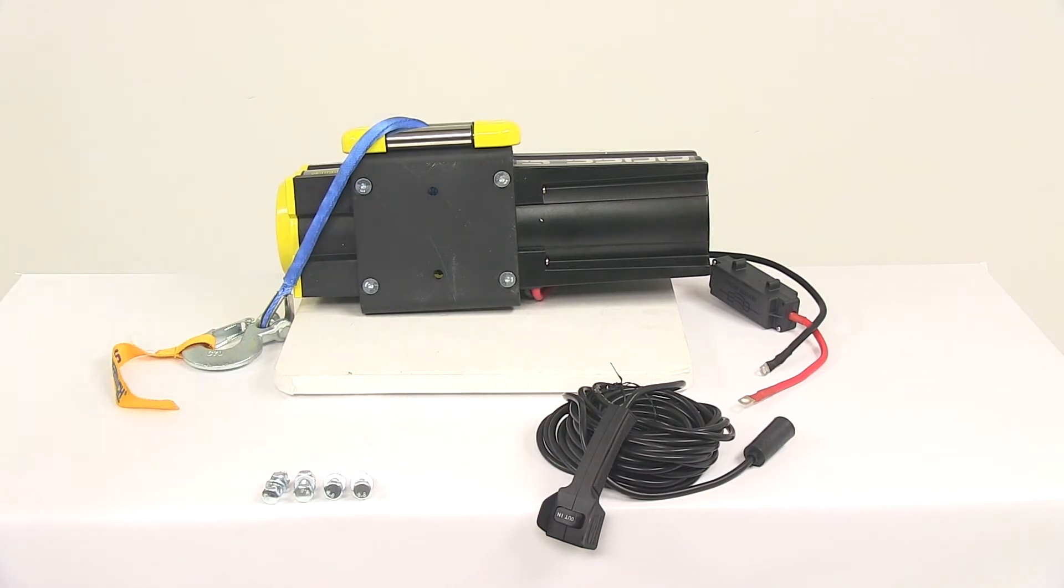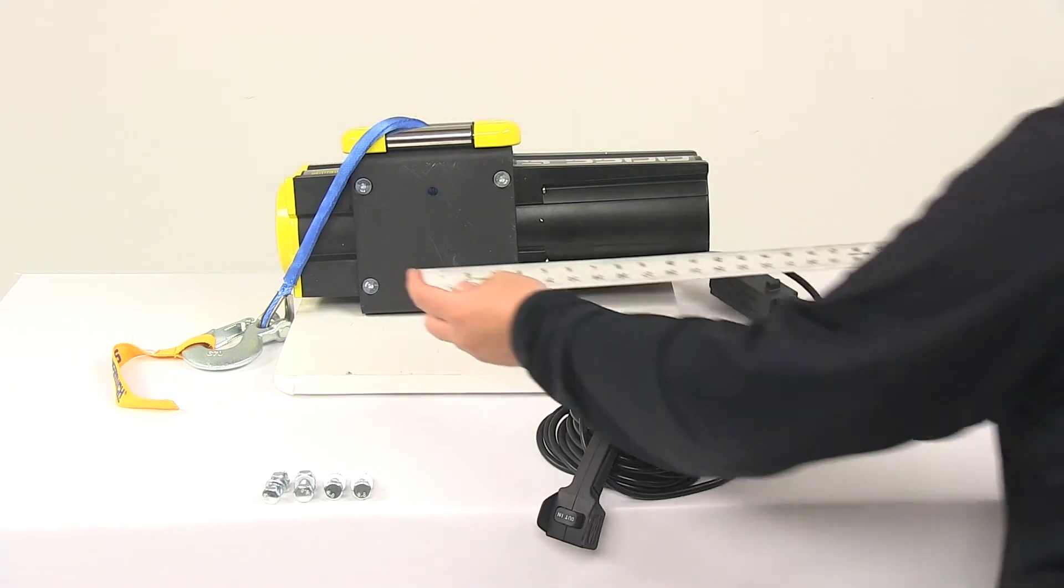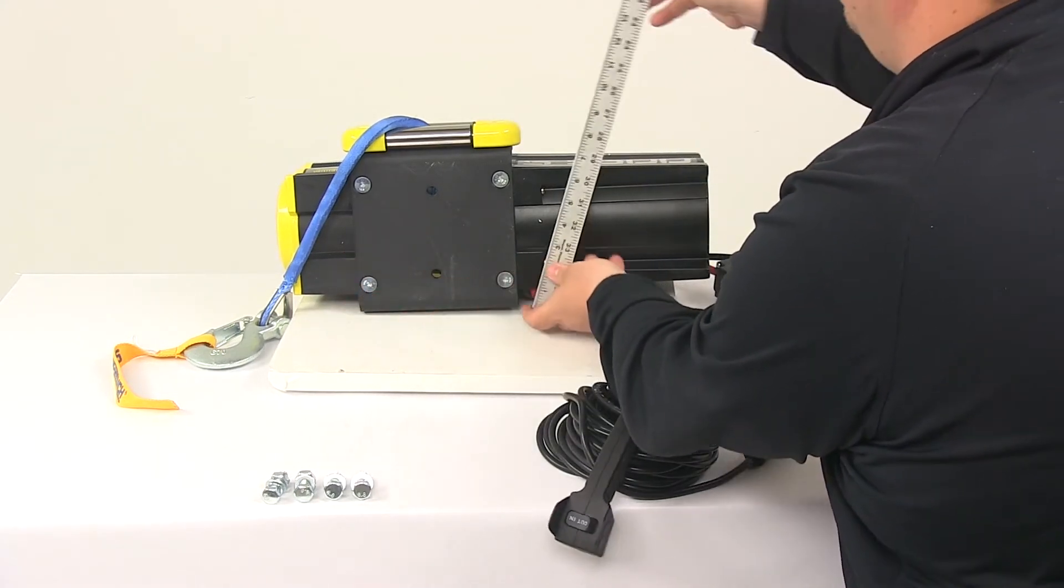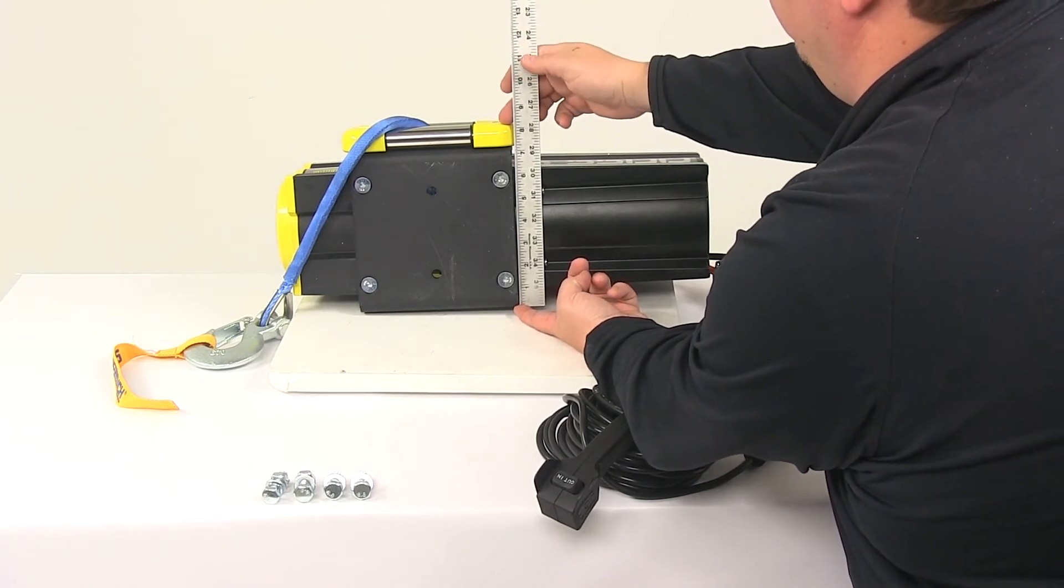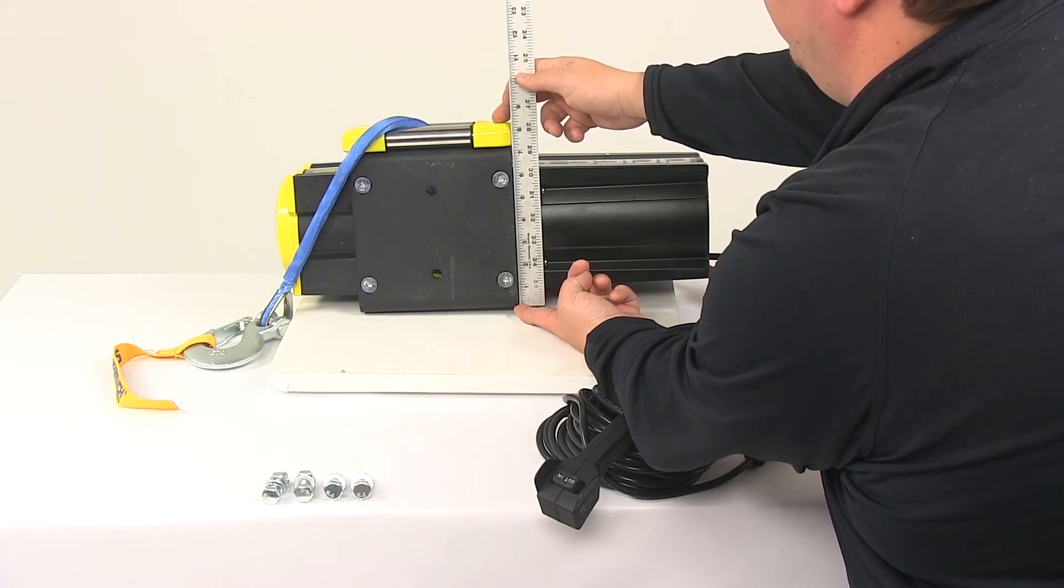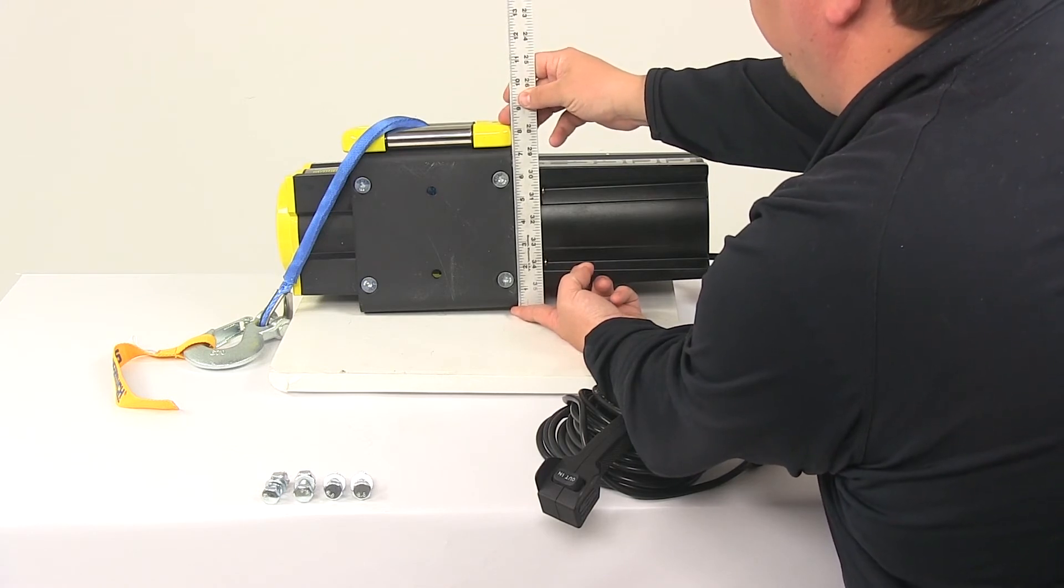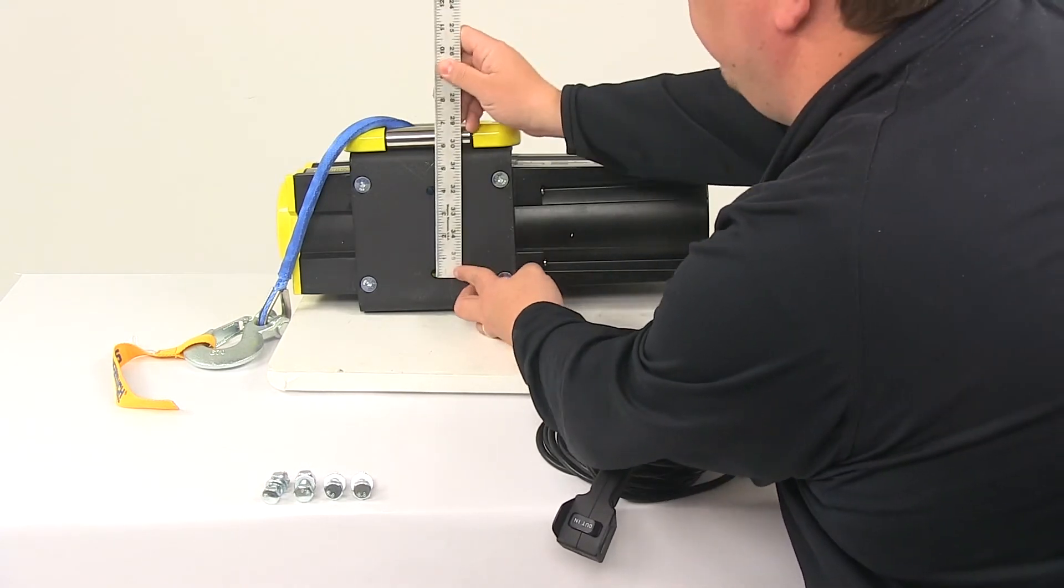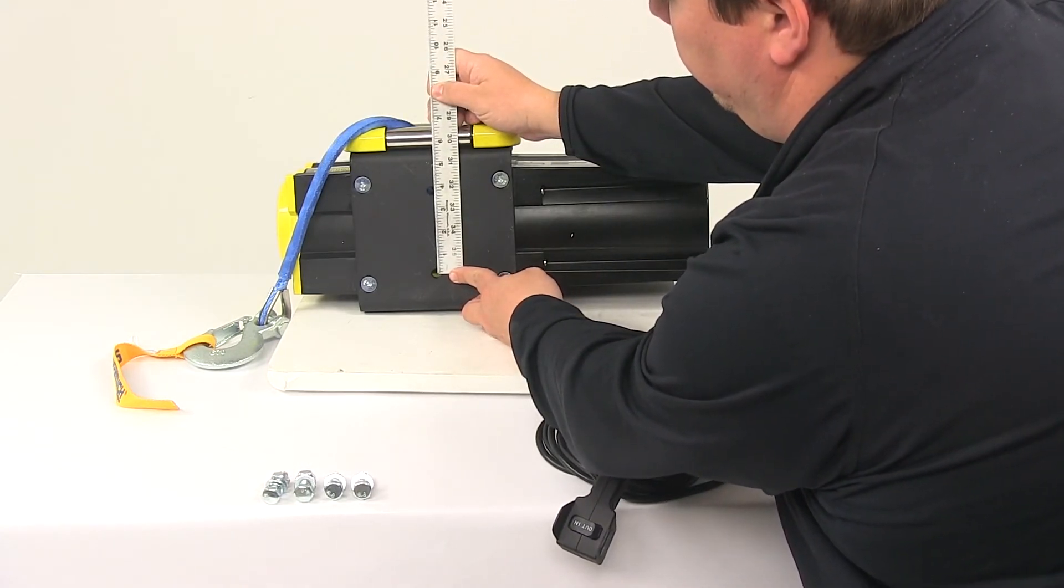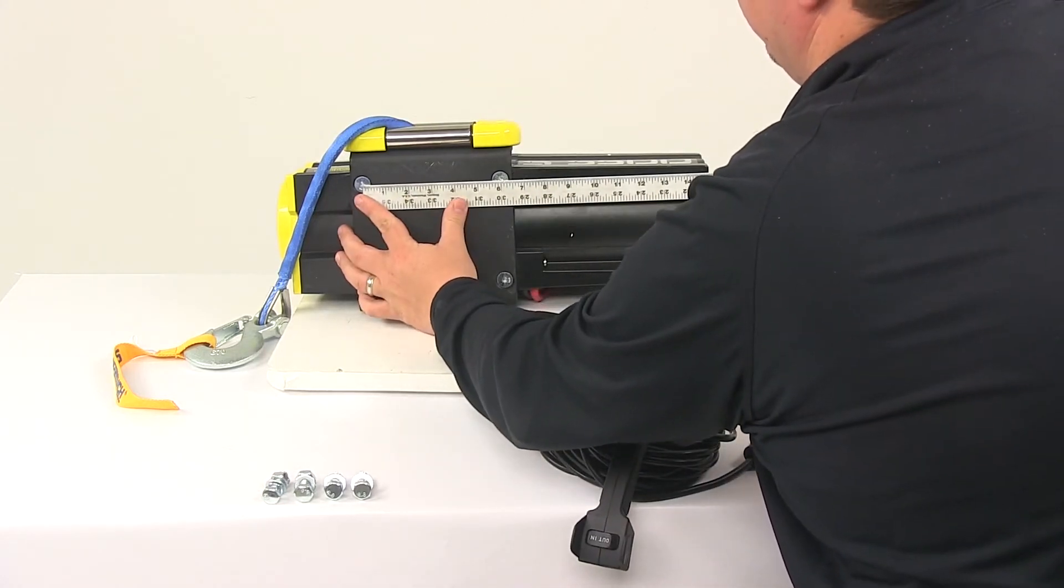While we have this flipped up, I want to give you some measurements. Taking a measurement of the base plate, going this direction we're looking at about seven inches. Going this direction all the way out to the outer point of the Hoss Fairlead with the stainless steel rollers, that's about eight and one-quarter. These two holes are separated on center by three and eleven-sixteenths of an inch. These two holes, four and a half inches. These two holes on center, six inches.